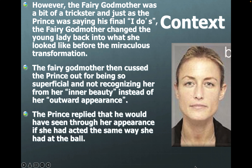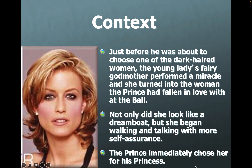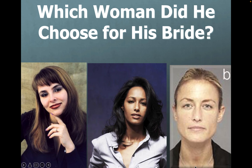However, the fairy godmother was a bit of a trickster. Just as the prince was saying his final I do's, the fairy godmother changed the young lady back into what she looked like before the miraculous transformation. The fairy godmother then cussed the prince out for being so superficial and not recognizing her inner beauty instead of her outward appearance. The prince replied that he would have seen through her appearance if she had acted the same way she had acted at the ball. This has a lot to do with context. If you've ever gone to a grocery store and not recognized somebody who you normally see in a different context, like at school, now you understand what the prince was complaining about.